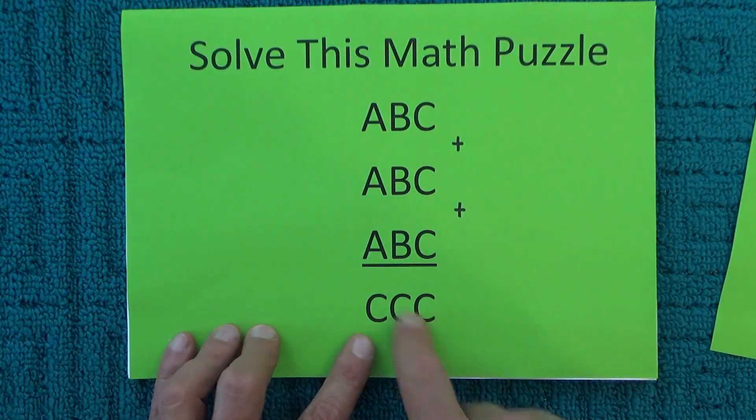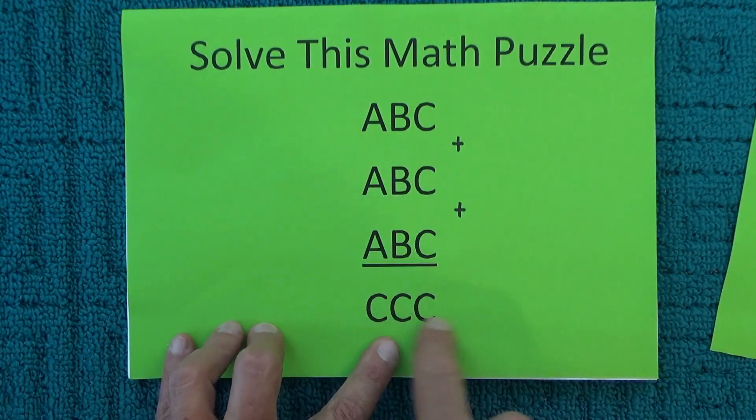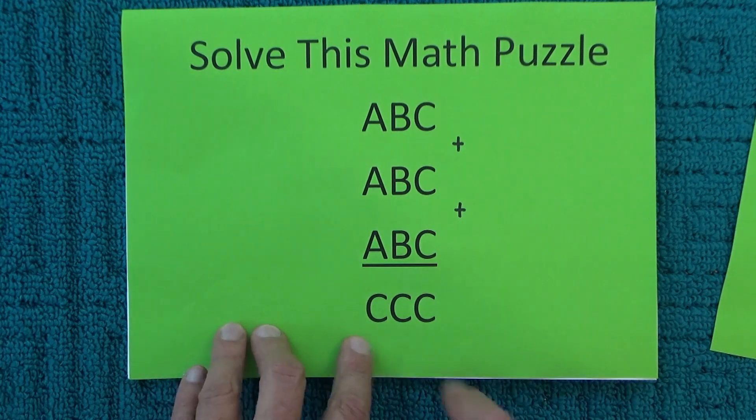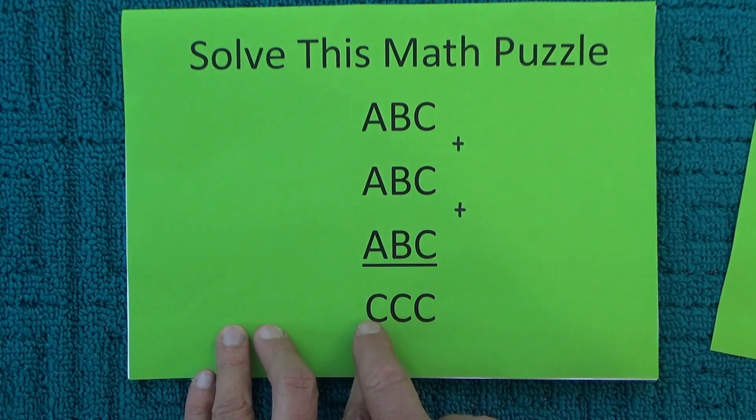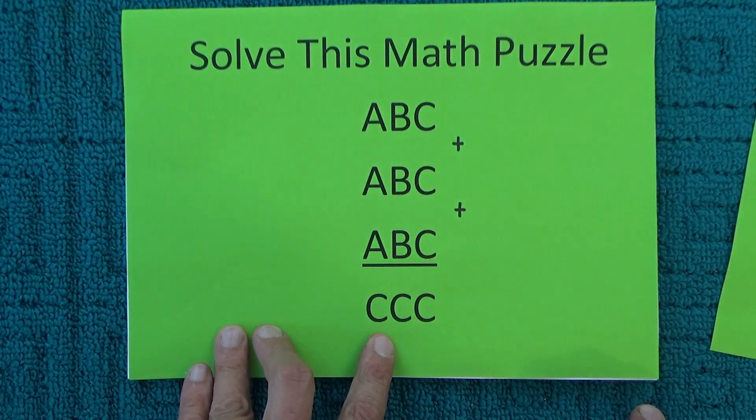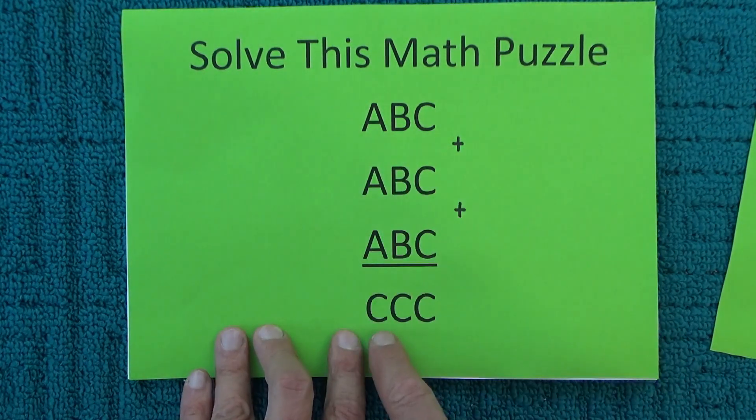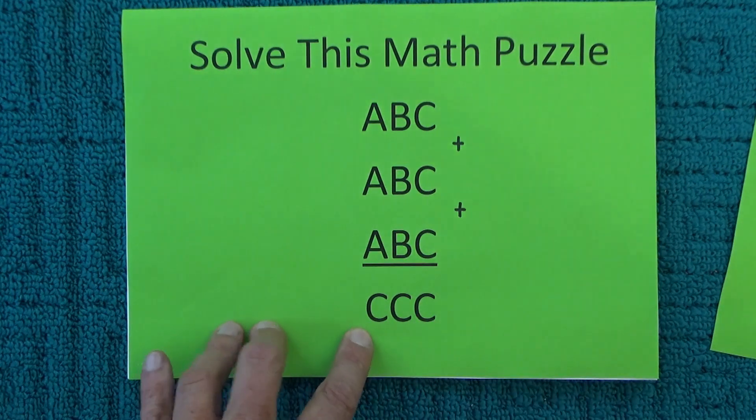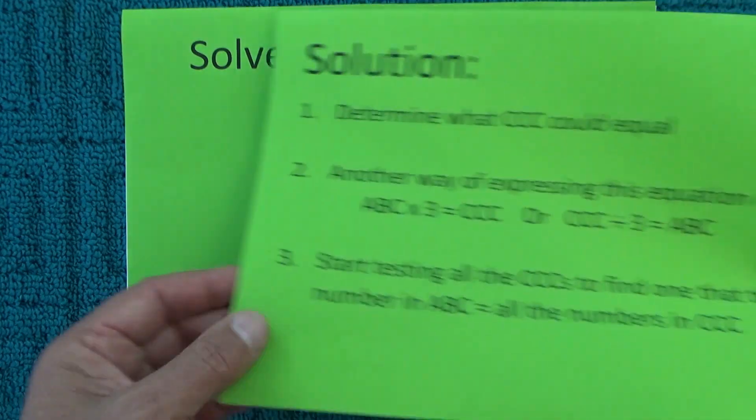These letters represent numbers, so A, B, and C are all different numbers, but CCC is the same number repeated three times.